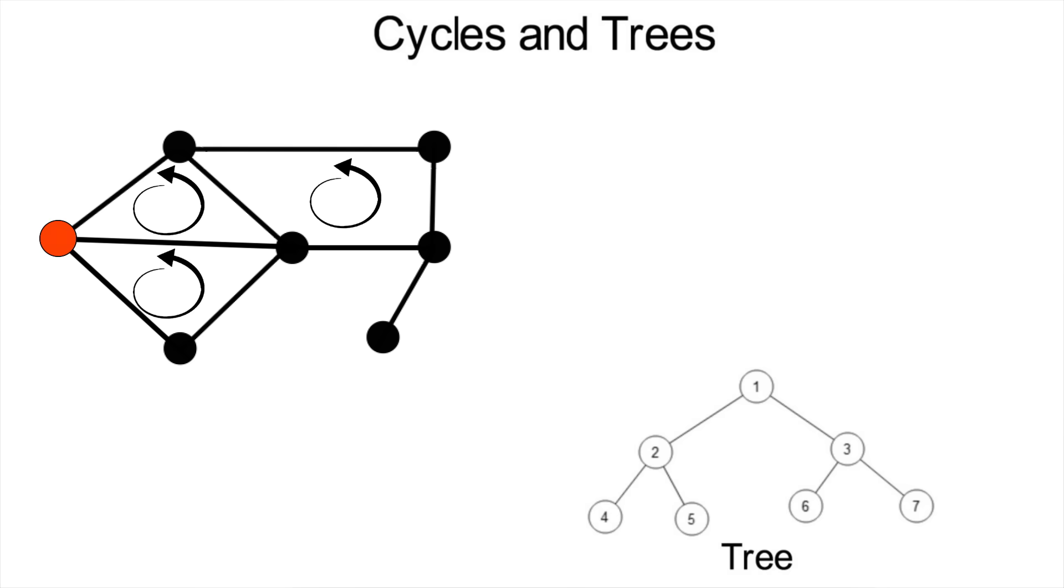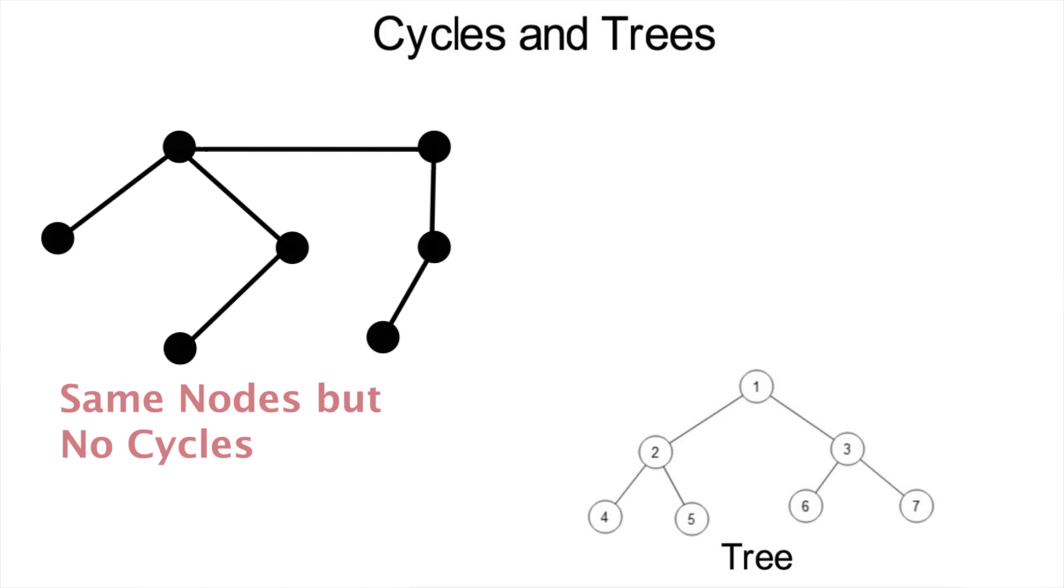Here's something you'll prove in class as a computer scientist or mathematician. No matter what connected graph you have or how many cycles it has like this one above, there's a way to remove certain edges such that you have a tree but don't lose any nodes. They're all still there and everything is still connected. This is called a spanning tree.